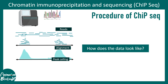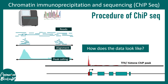So how does the data look? There would be a genomic track at the bottom and peaks on the top. Where you see a high peak, that means at that particular region your protein of interest had bound to the DNA. In this given example, the peak is very strong at the promoter.